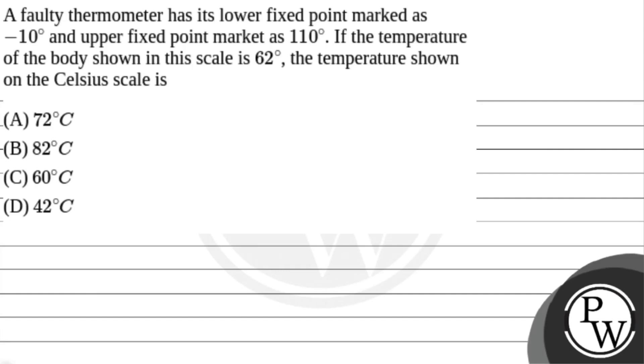Hello guys, let's read the question. A faulty thermometer has its lower fixed point marked as minus 10 degrees and upper fixed point marked as 110 degrees. If the temperature of the body shown in this scale is 62 degrees, the temperature shown on the Celsius scale is.